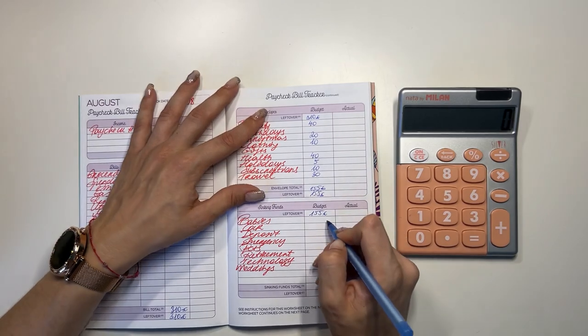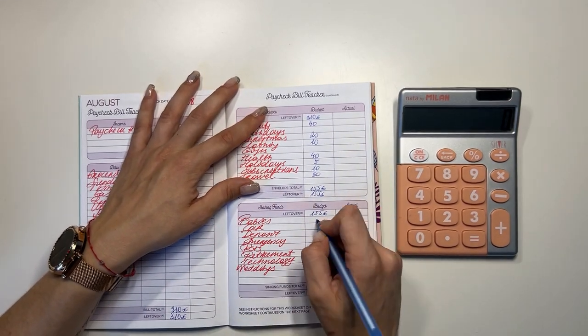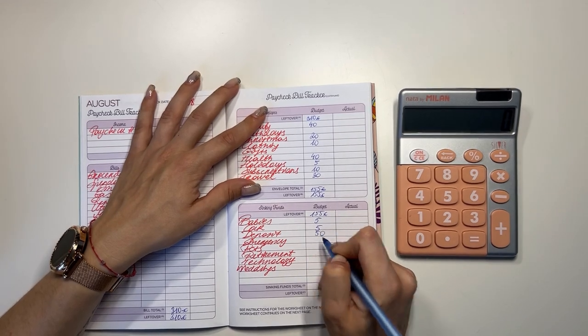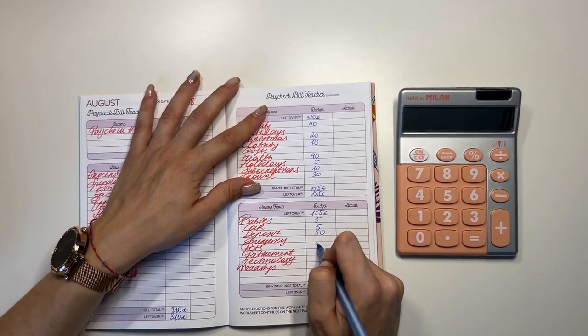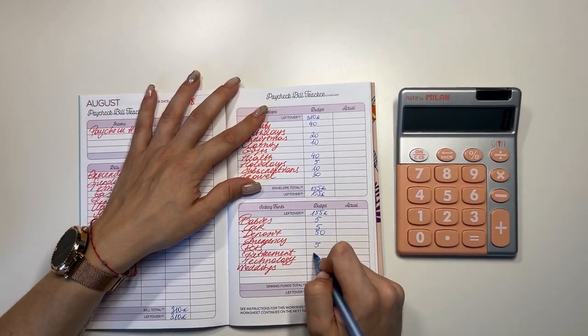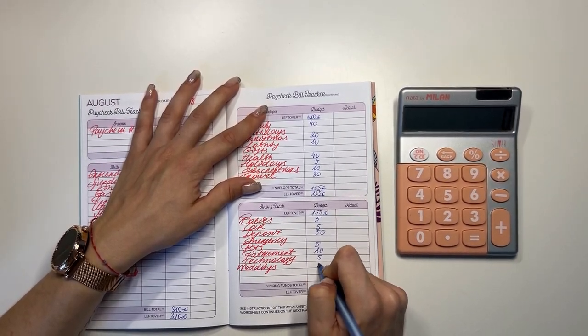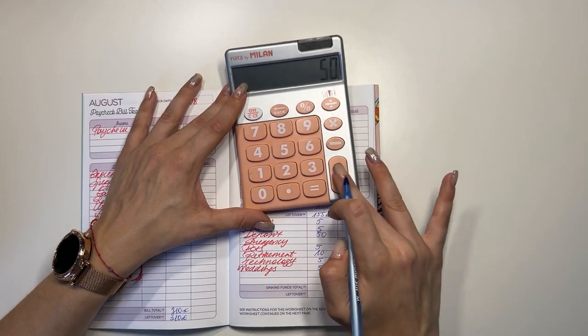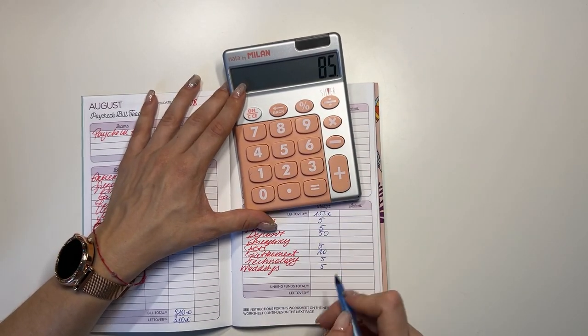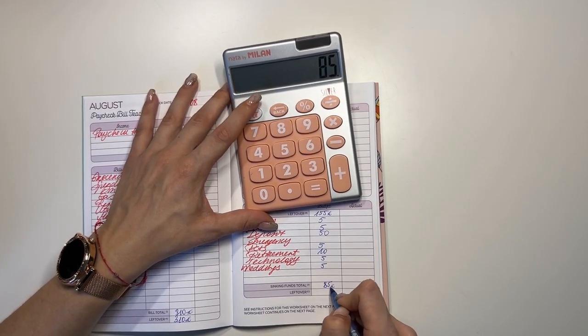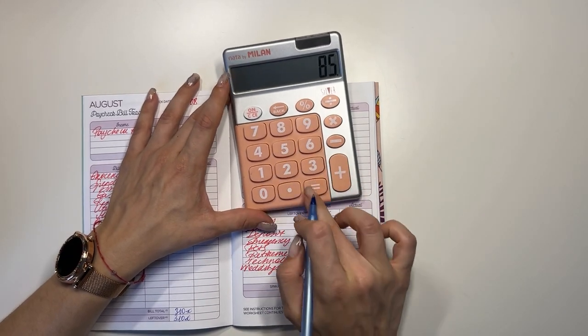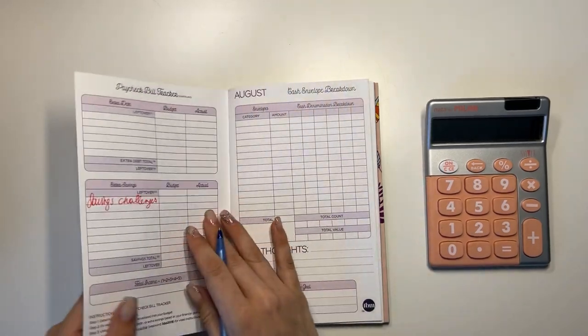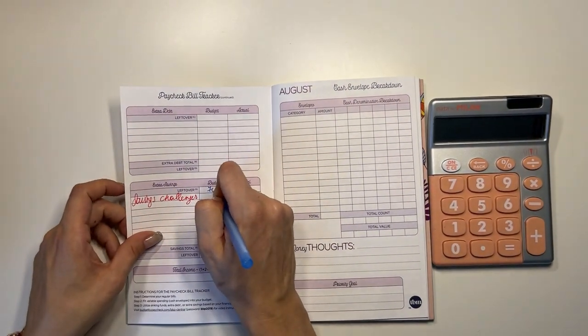Long-term sinking funds we are putting 5 into babies, 5 into car, 50 in deposit, 5 in pets, 10 in retirement and 5 in technology and weddings each. So that's 85. We have 155 minus 85 is 70, and all of that 70 will go into our savings challenge.